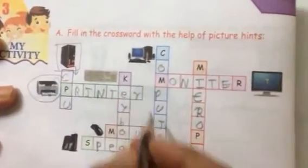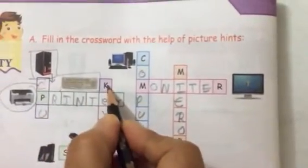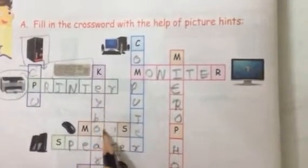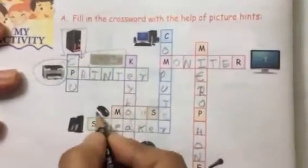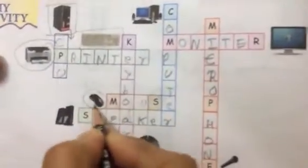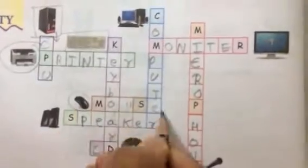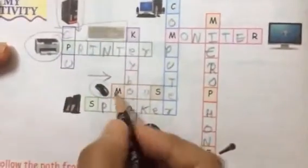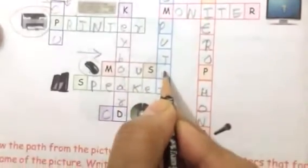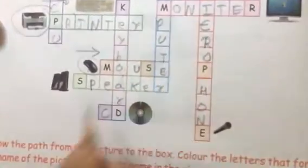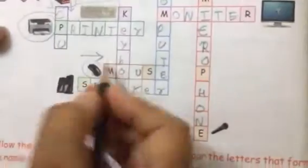Next — यहाँ पर किस चीज की photo बनी है? Keyboard। और यहाँ से K से start हो रहा है तो हम लिखेंगे K-E-Y-B-O-A-R-D, Keyboard. All right। अभी हमने Keyboard लिखा। यहाँ पर यह क्या है? Mouse। तो हम इस side में Mouse लिखेंगे M-O-U-S-E. Mouse. All right. Very good.